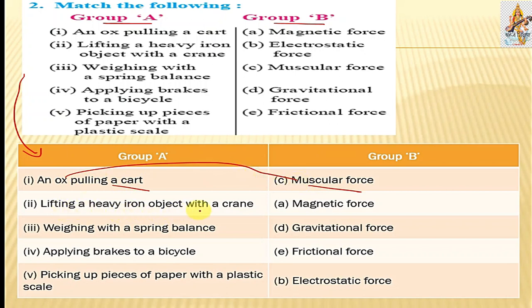Lifting a heavy iron object with a crane is magnetic force. For in ship transport, heavy objects are lifted by the magnetic force of crane. Weighing in a spring balance is gravitational force. Applying brakes to a bicycle is frictional force to stop the bicycle. Picking up pieces of paper with plastic scale is electrostatic force. By rubbing, you can create an electrostatic force.